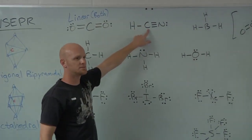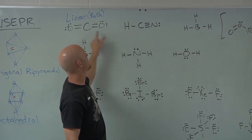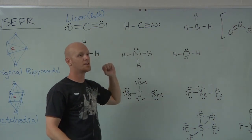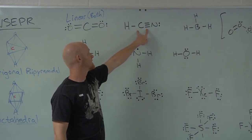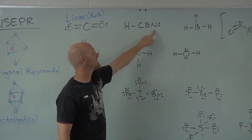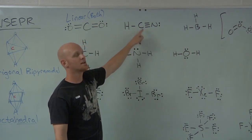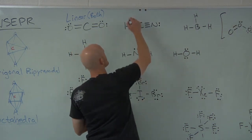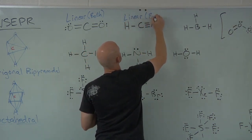It doesn't matter whether it's a single bond, double bond, or triple bond to an atom — that counts as one electron domain. With two electron domains, the electron domain geometry is still linear. Since both domains are bonding domains, the molecular geometry also has the same name: linear.